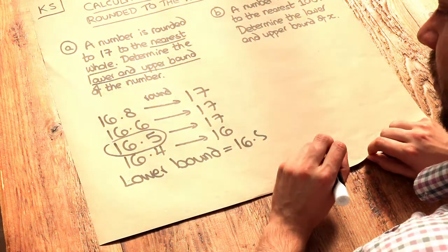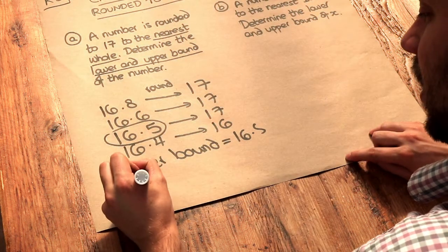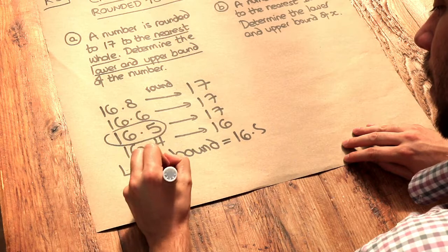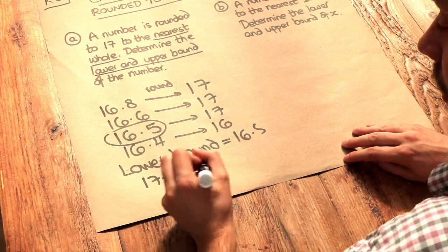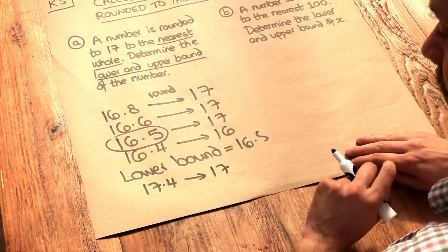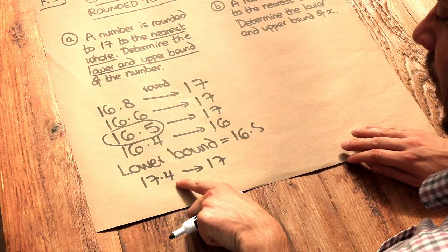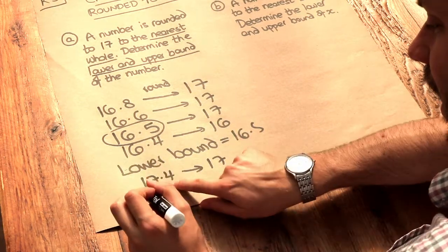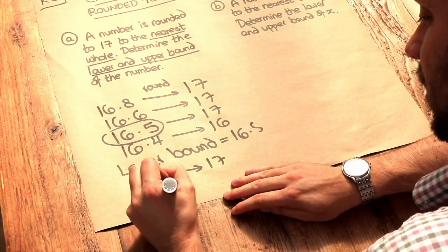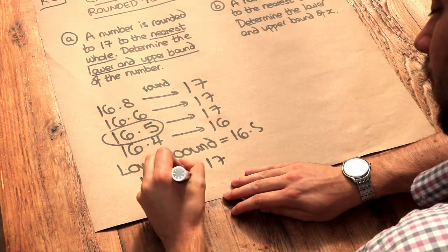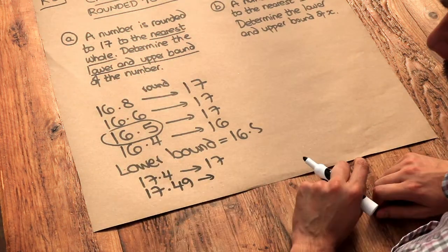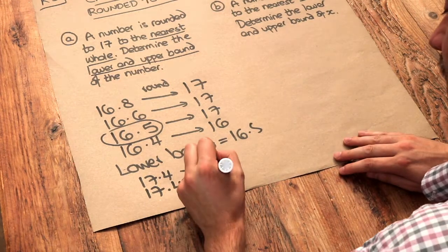And what about the upper bound? Well, if I had 17.4, what does that round to? That rounds to 17, to the nearest whole. So that seems to be good. If you had 17.5, that rounds to 18. But the thing is, we could go to more decimal places. We could have 17.49. And that still to the nearest whole is 17, just about.